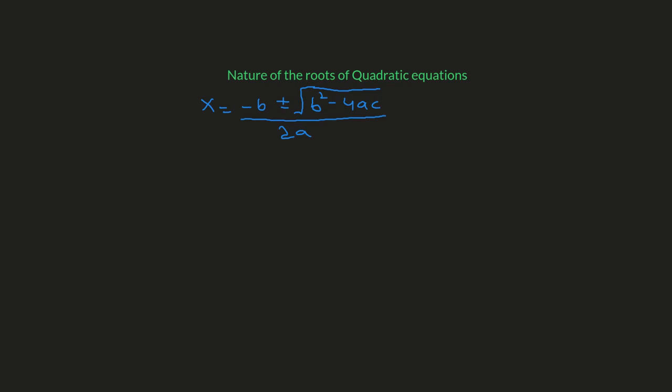Most students are familiar with the quadratic formula. Today we're going to discuss the nature of the roots of the quadratic equation. The nature of the roots of the quadratic equation depends upon b-squared minus 4ac, and this value b-squared minus 4ac is known as the discriminant.